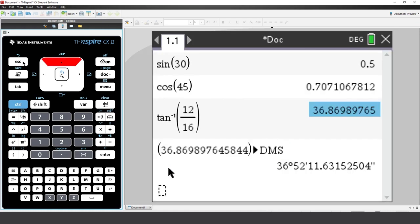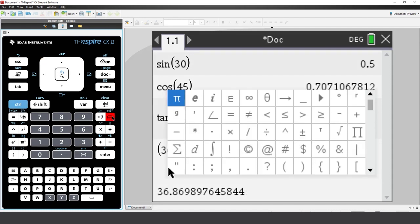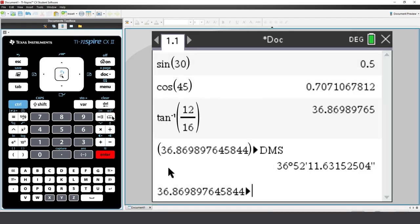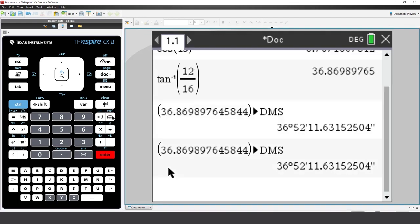There is another way to convert to degrees, minutes, and seconds. Press Control Catalogue. This accesses the symbols. Choose the solid triangle, and then type DMS. And we see the same result.